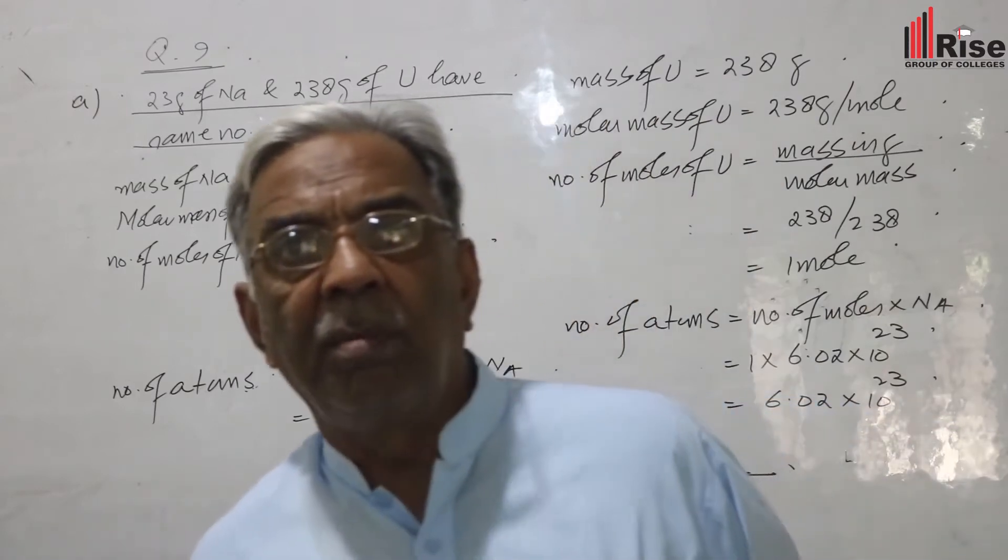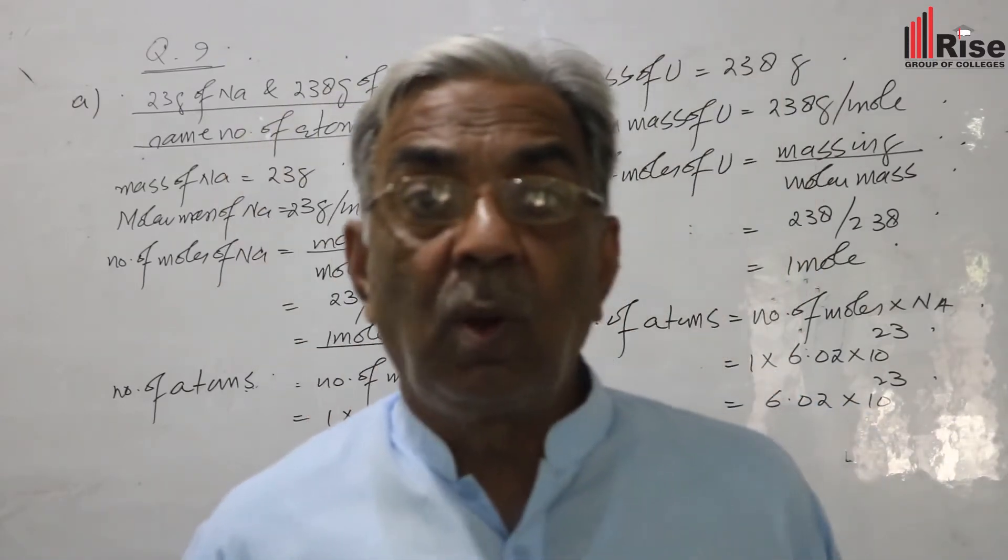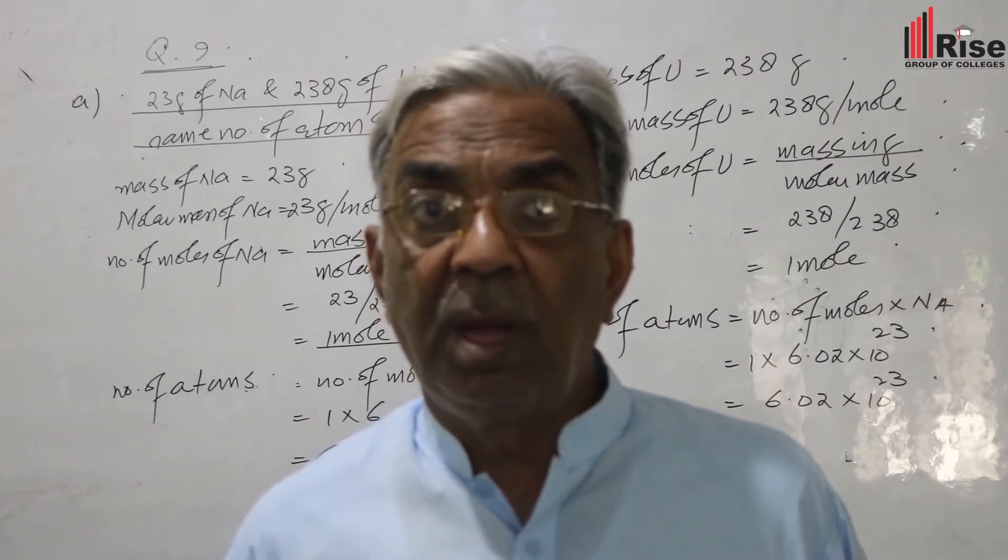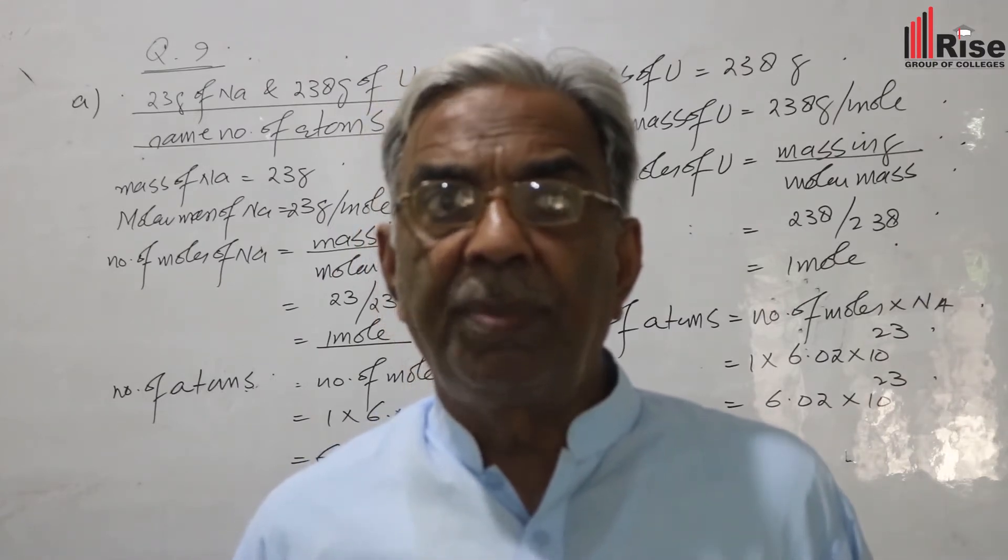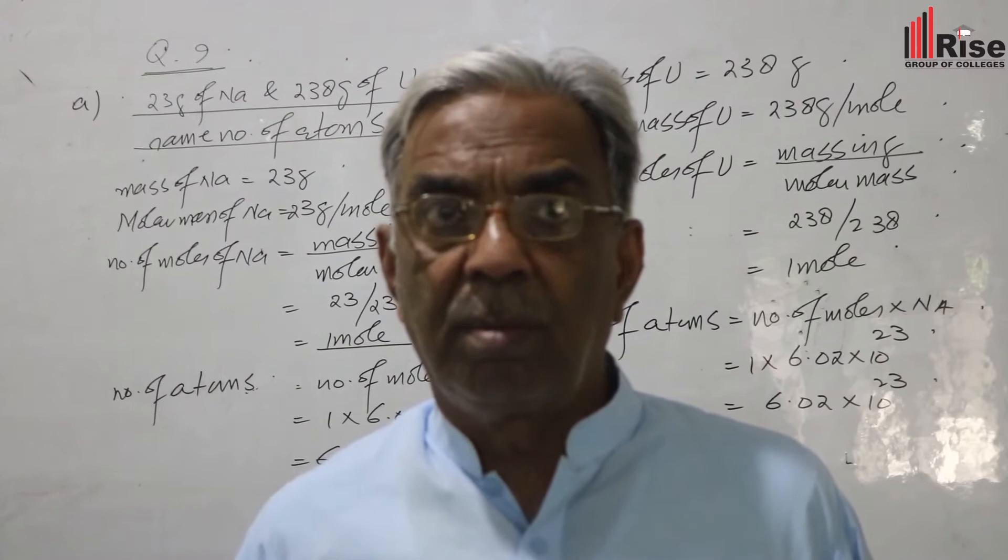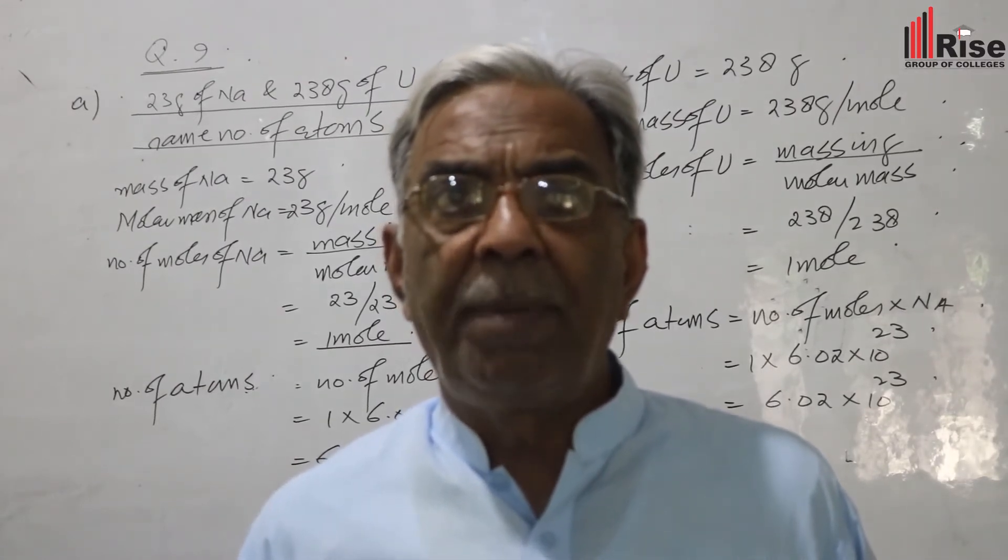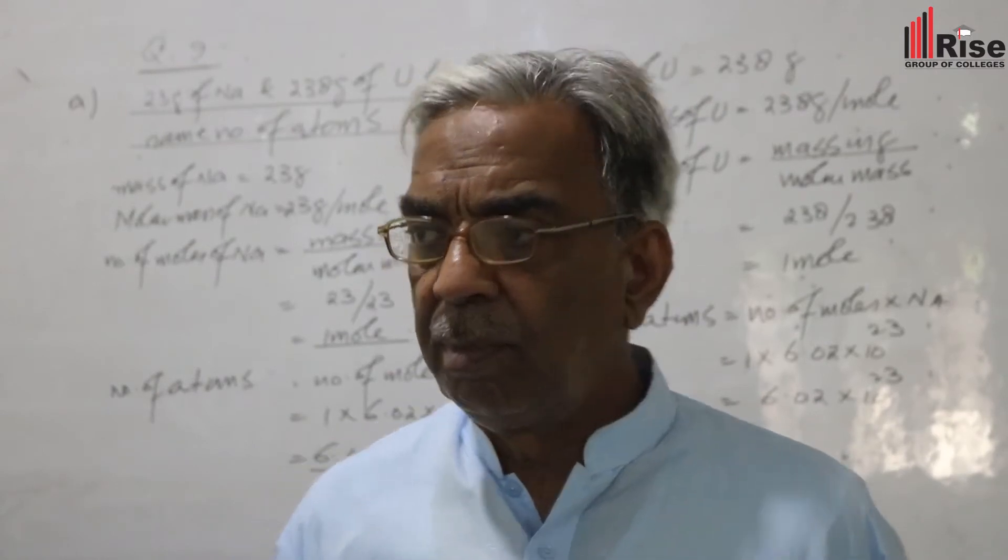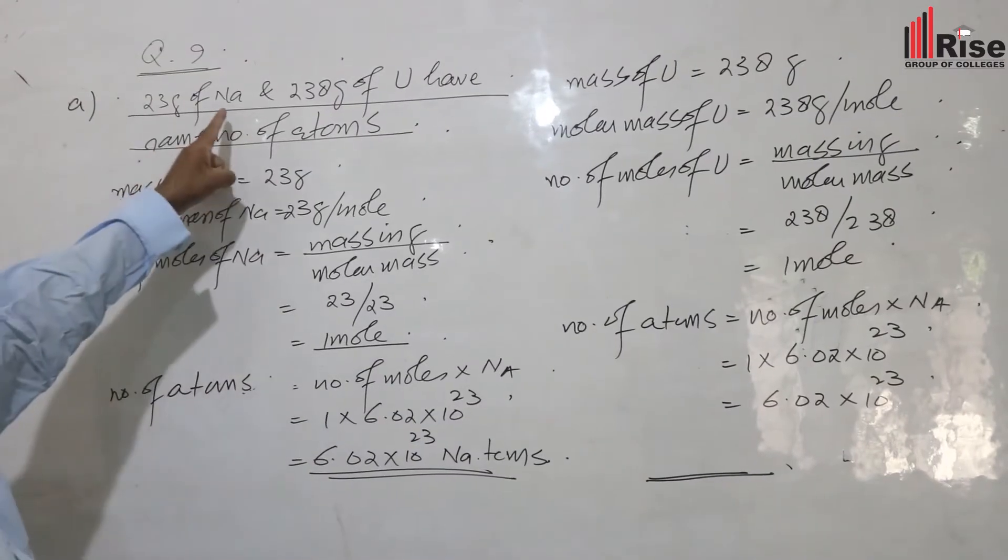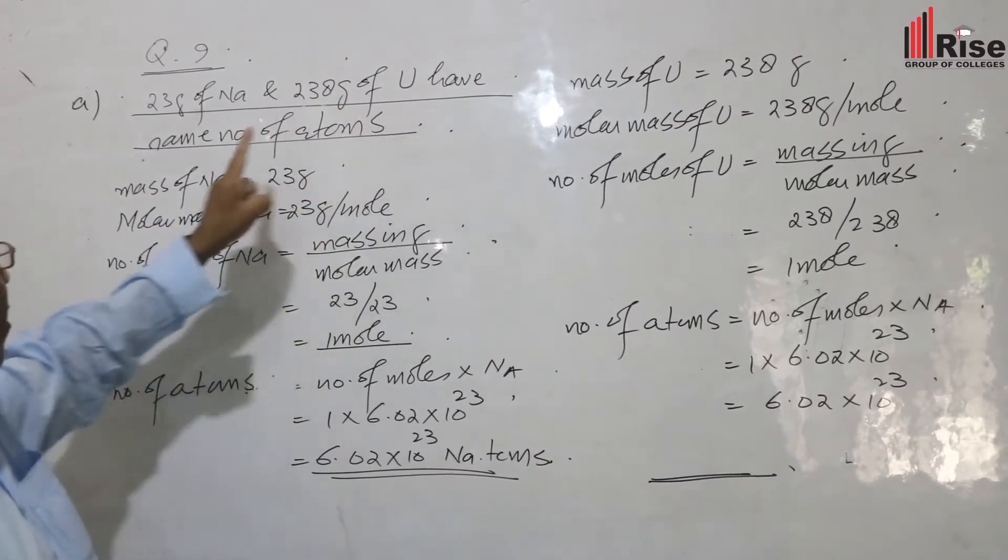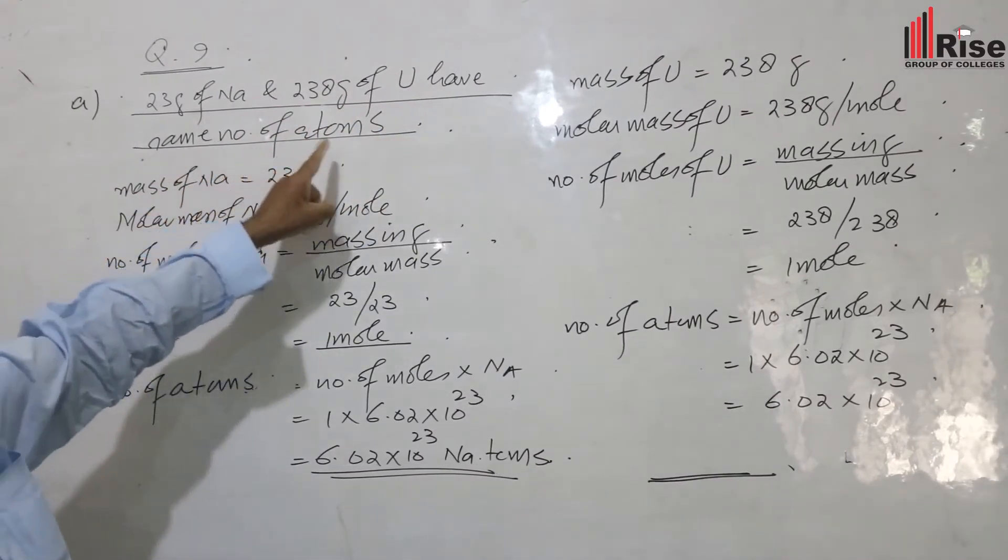Bismillahirrahmanirrahim, Rise College Multan chemistry lecture, first year, chapter number one, exercise question number nine, part A. 23 grams of sodium and 238 grams of uranium have same number of atoms.